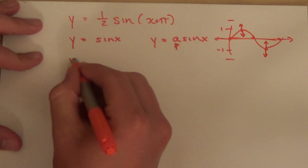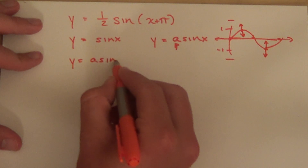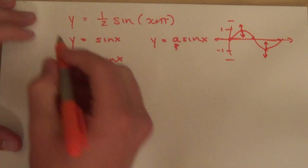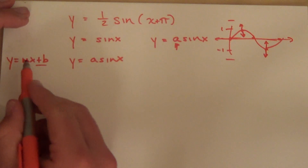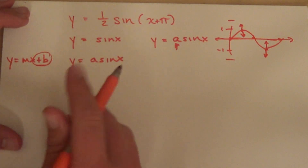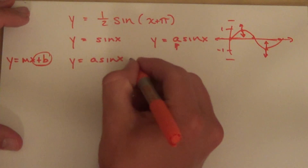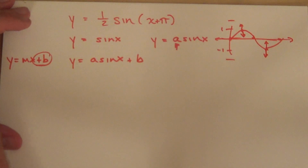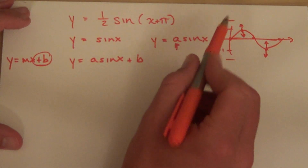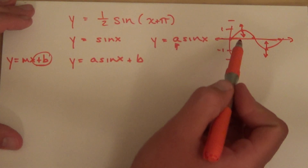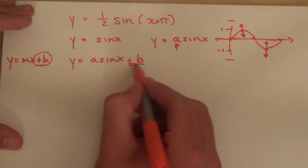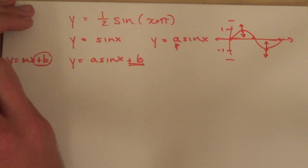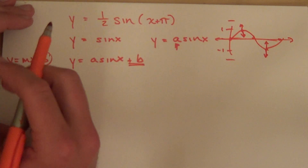There are other things I can do. I can say y equals a·sine(x) and think about this like y equals mx plus b — whatever you were adding was your y-intercept. Similarly, if I add a value b out here, whatever I add is going to shift every point up or down in unison. So this value outside becomes your new y-intercept — that's how much your graph shifts up or down. That's called the vertical shift.